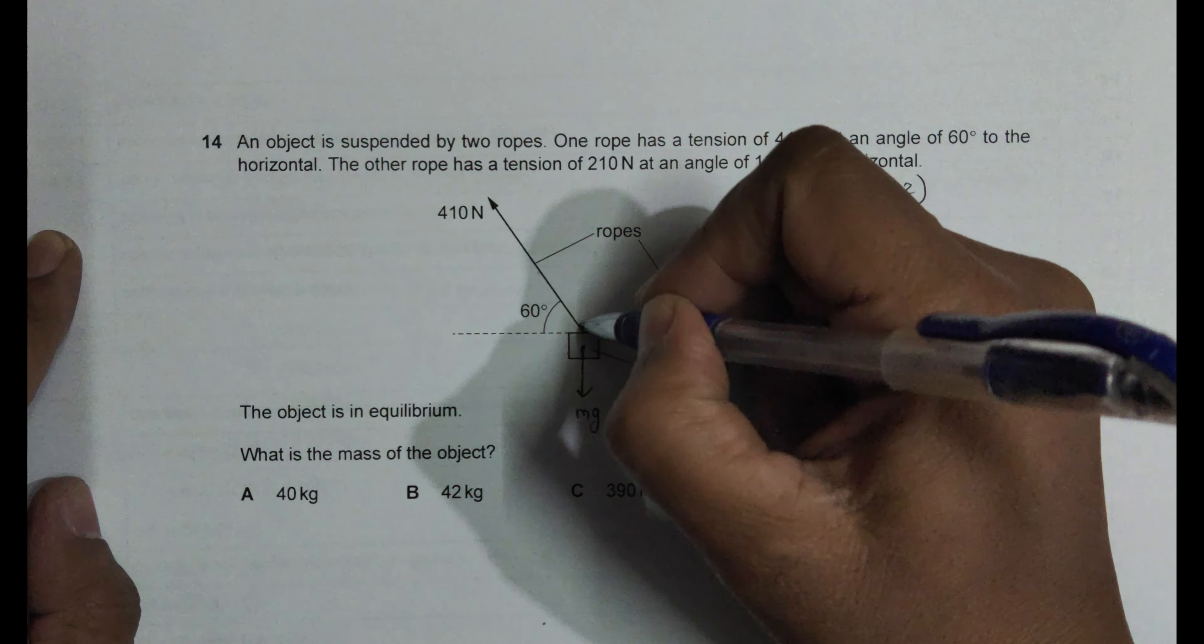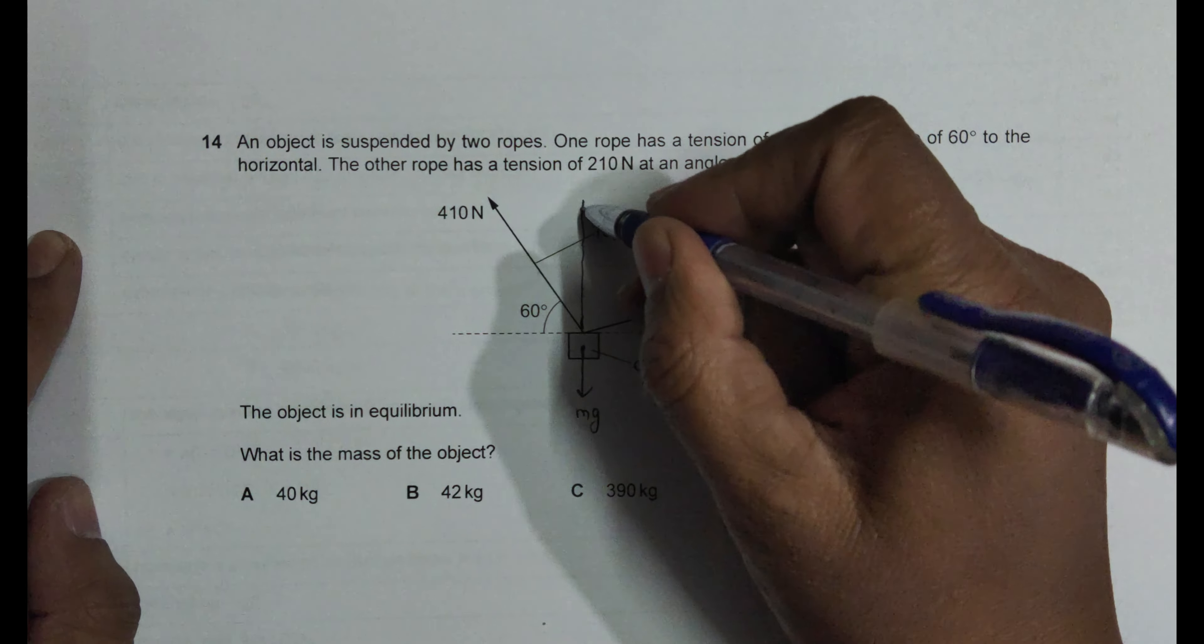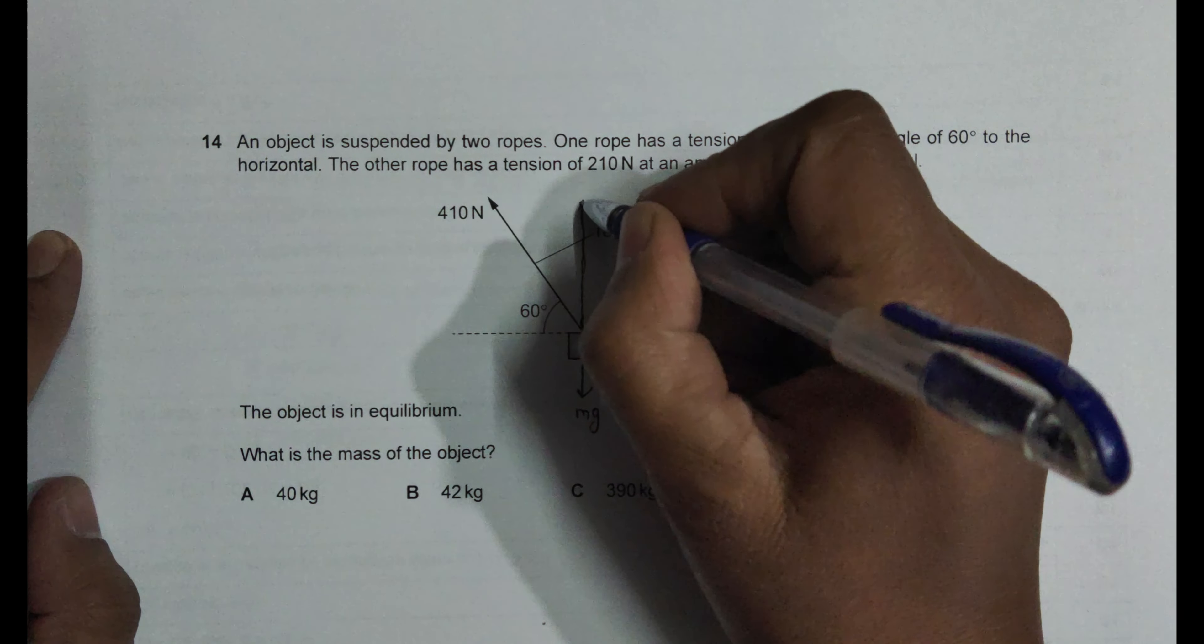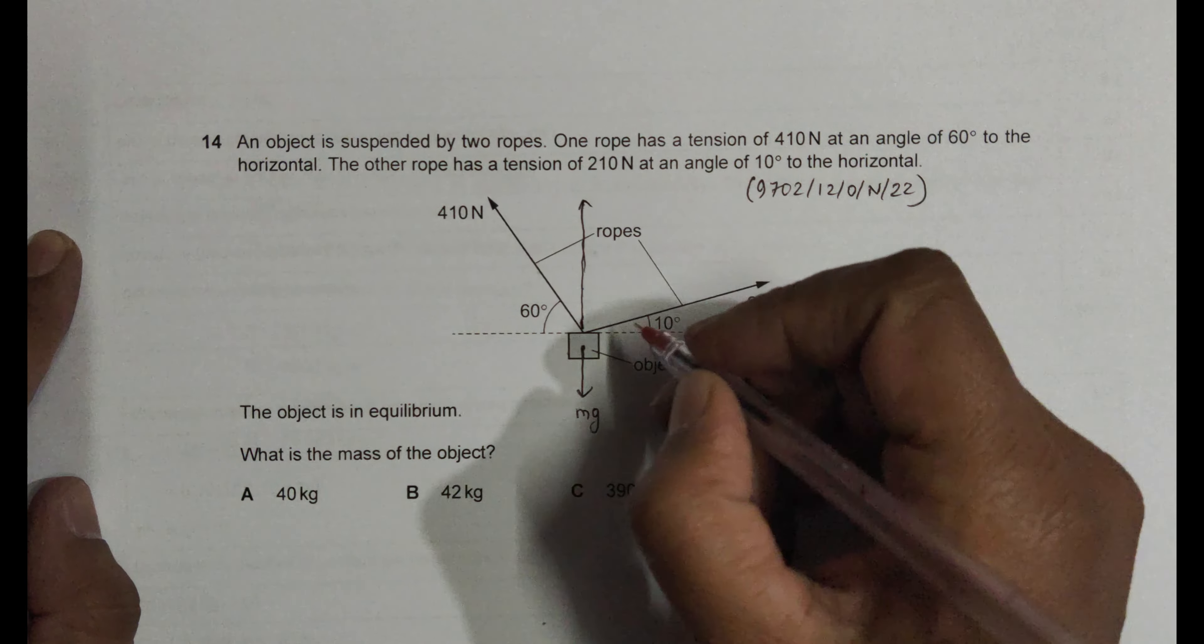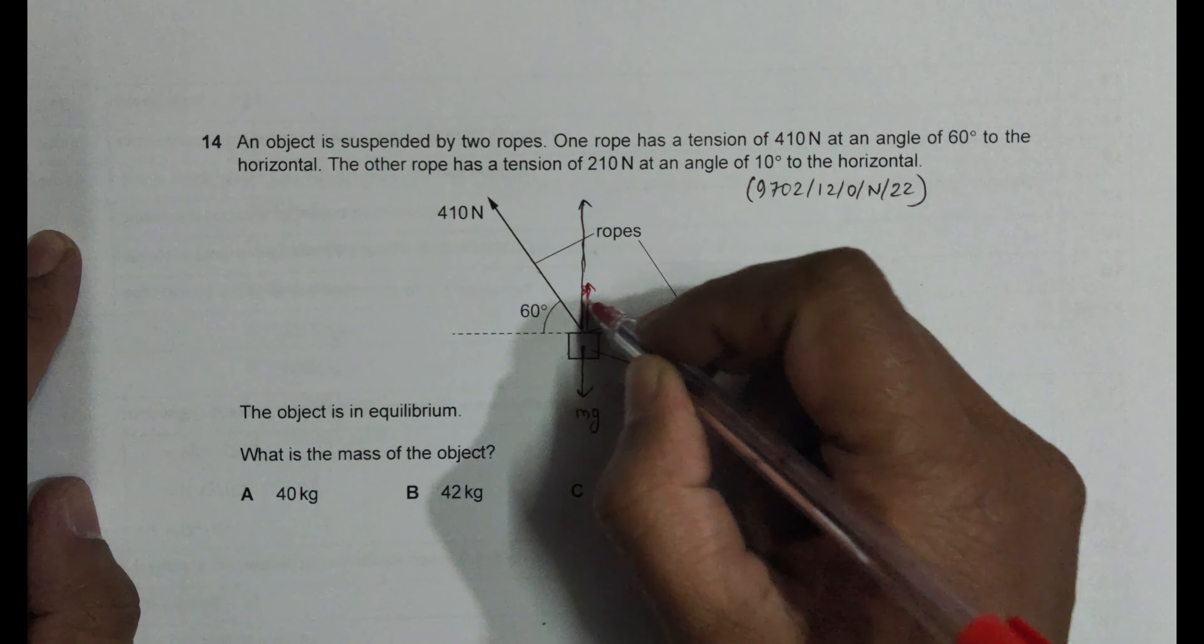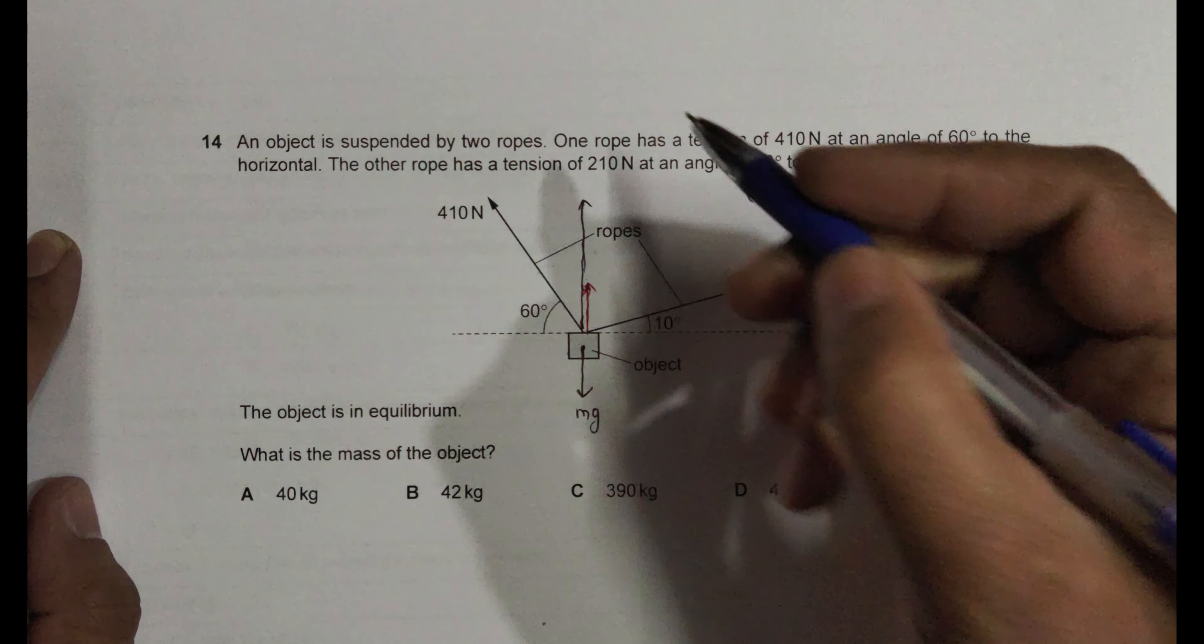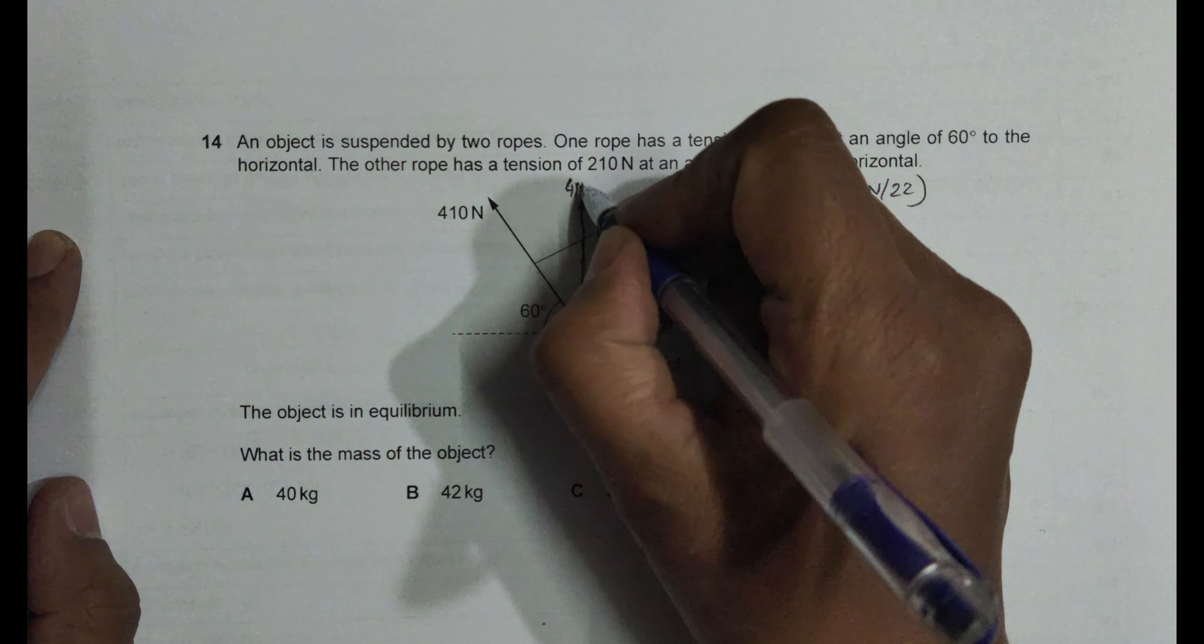So the vertical component of this force will be somewhat like this. This is the vertical component of this 410 newton, and this should be the vertical component of this 210 newton. So this should be the vertical component of this 210 newton, like this. So one belongs to 410 and one is this one.